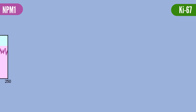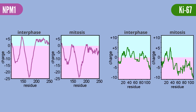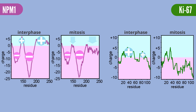We compared the charge distribution of the IDRs in the interphase and mitotic forms. The IDR of NPM1 carries several alternating charge blocks in the interphase form, and mitotic phosphorylation seems to diminish the positive blocks. In contrast, the repeat domain of Ki67 has positive charges in the interphase form, and mitotic phosphorylation generates a negative block in the C-terminal half.